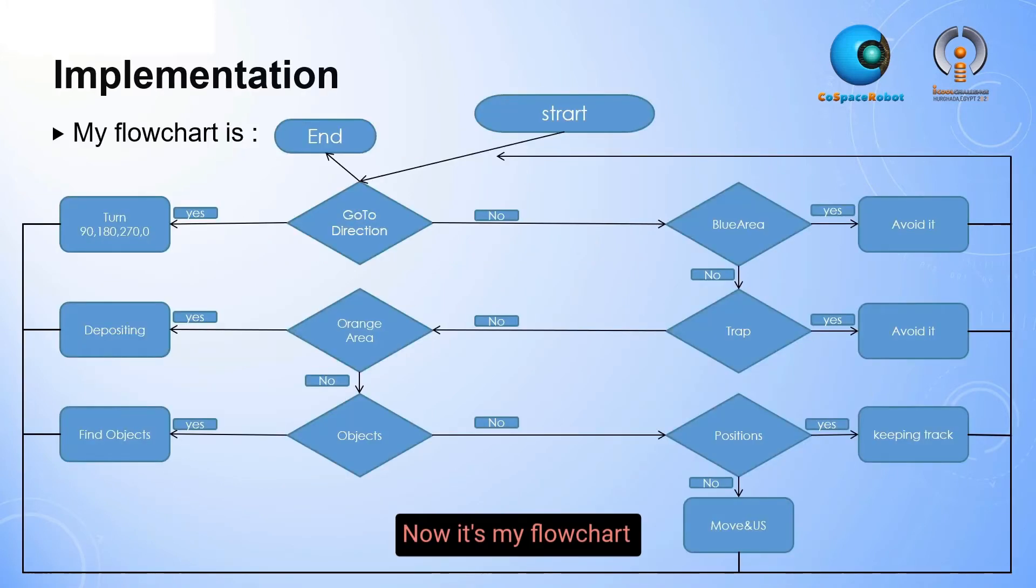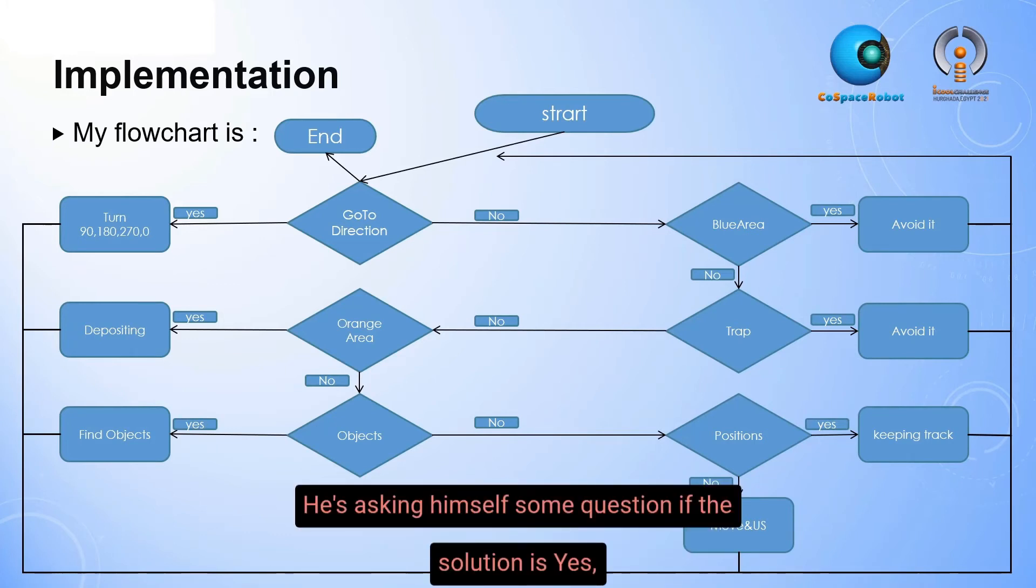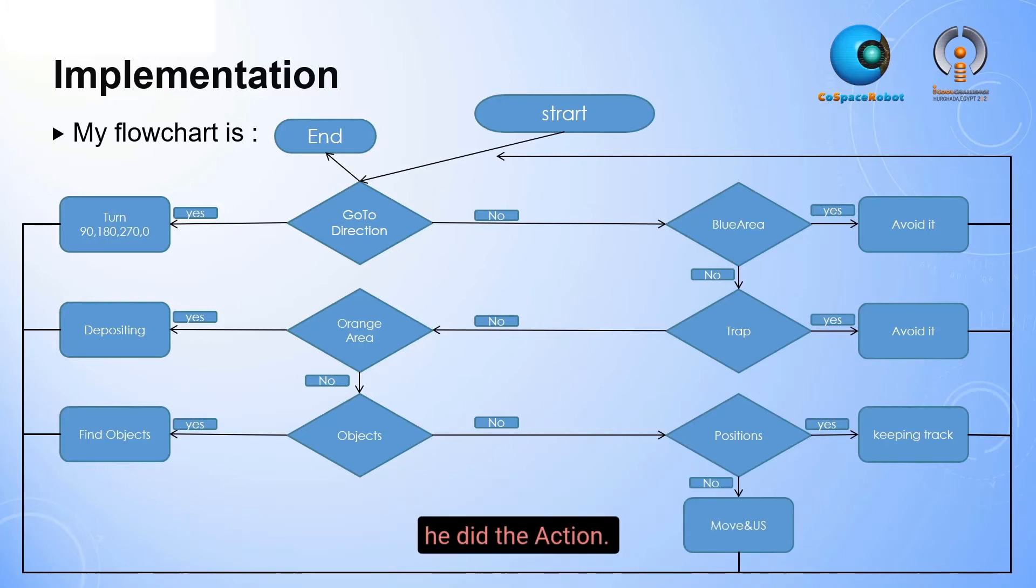Now, it's my flow chart. It illustrates what the robot did. He asked himself some questions. If the solution is yes, he did the solution. If it's no, he asked himself another question.